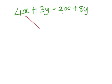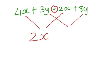Again, we put the x's together. Remember the sign in front is very important. So, this time we would do 4 minus 2 which would give us a 2x. And then we do the y's. So we just do 3 plus 8 which is 11y.